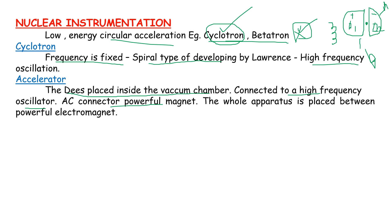There are two Ds placed in the center. Here is a south pole magnet and here is a north pole magnet — two magnets connected together. The whole apparatus is placed between powerful electromagnets.